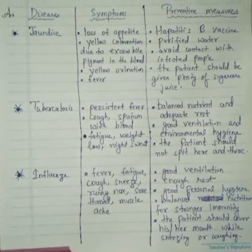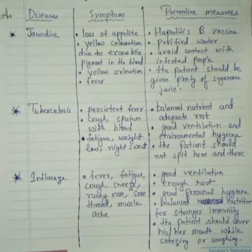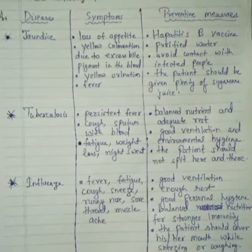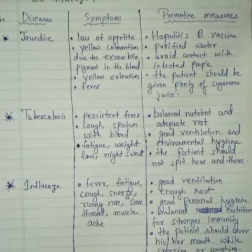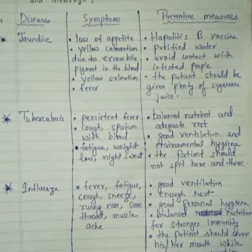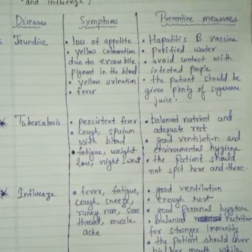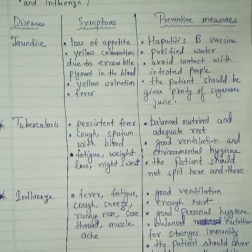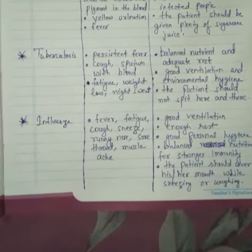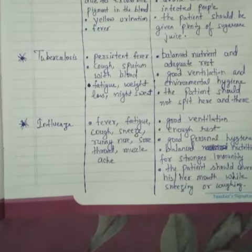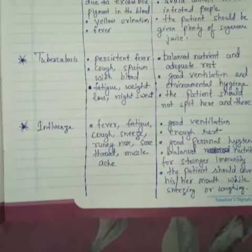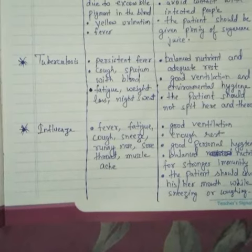Symptoms of tuberculosis: persistent fever, cough, coughing with blood, fatigue, weight loss, night sweats. Preventive measures: balanced nutrition and adequate rest, good ventilation, and proper hygiene. Patients should not spit in public places.